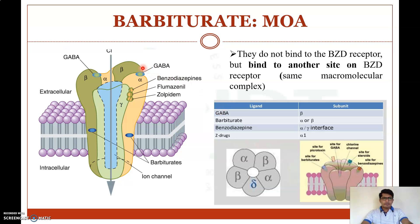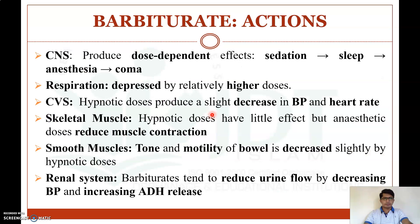There are different subunits in the GABA receptor complex: 2 alpha, 2 beta, and 2 gamma subunits. Barbiturates bind to sites present on the alpha or beta subunit. That is the mechanism of action of barbiturates.